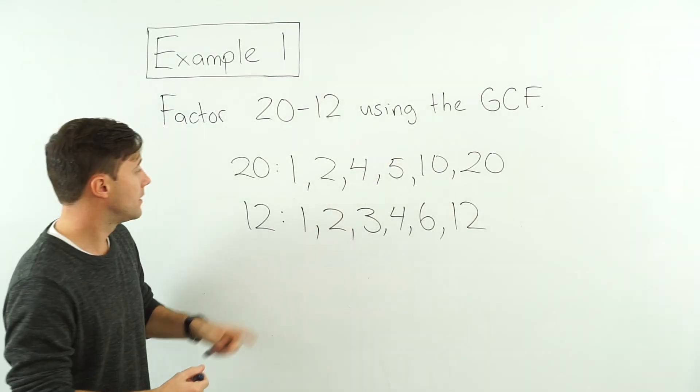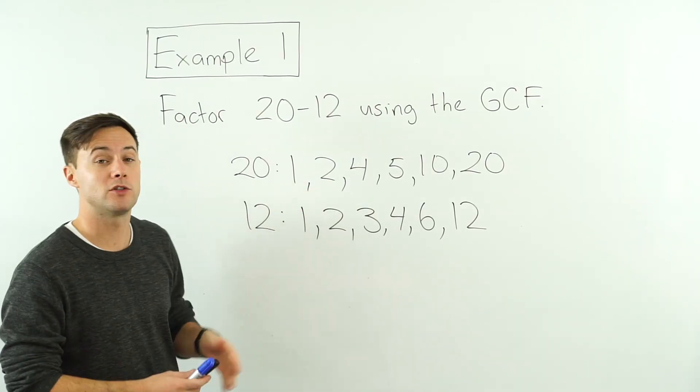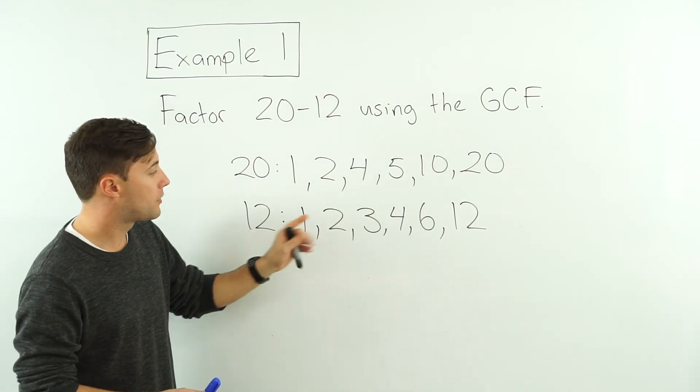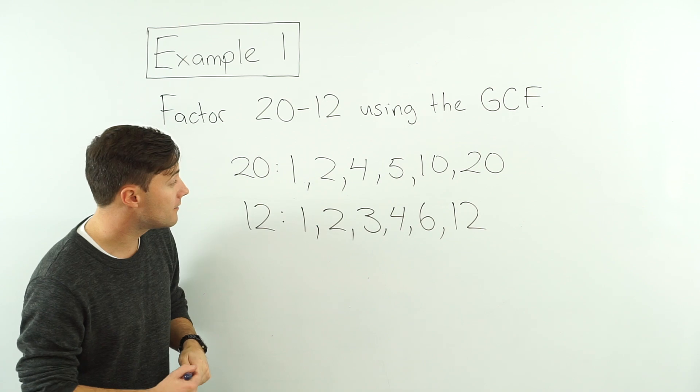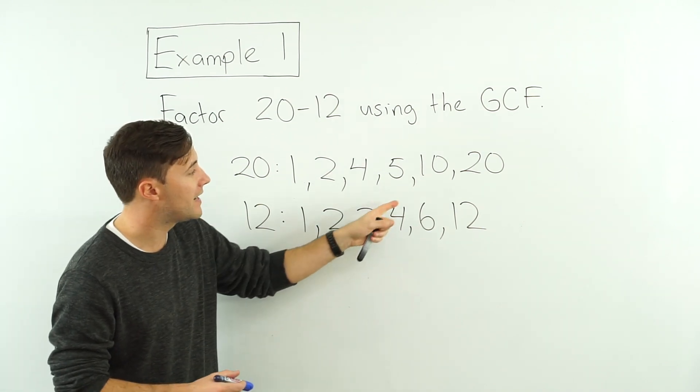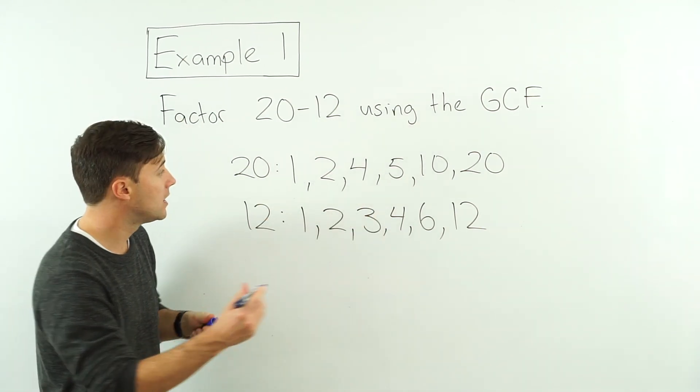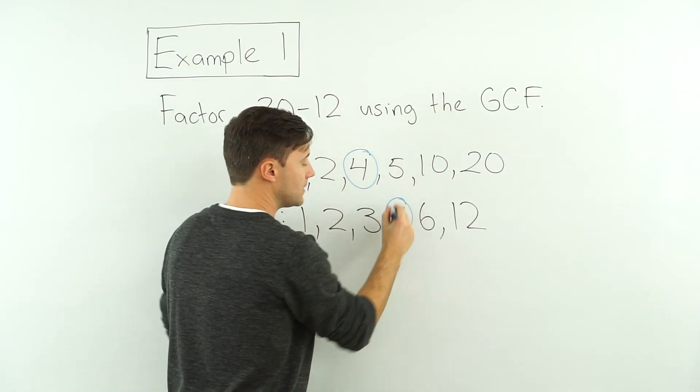So now, the greatest common factor. They both have a 1, so that's a common factor. They both have a 2, that's a common factor. 3, no. They both have a 4, that's a common factor. Are there any others that are common? No. So 4 is the greatest common factor.